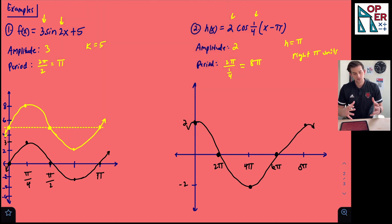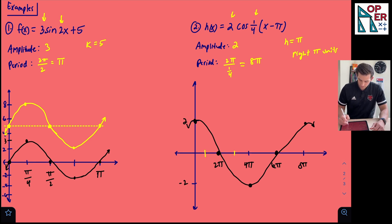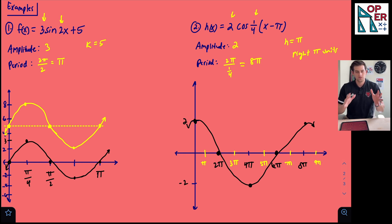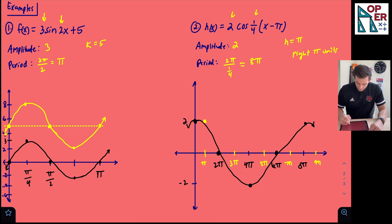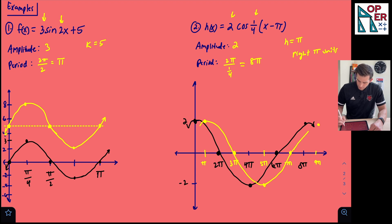Now in yellow, let's move those points pi units to the right. I'll add tick marks on the x-axis at pi, three pi, five pi, seven pi, and nine pi. Moving each point one pi unit to the right: the first point shifts to pi, the next to three pi, then five pi, six pi goes to seven pi, and eight pi goes to nine pi. Now we connect the yellow dots, and this graph represents the function for number two.